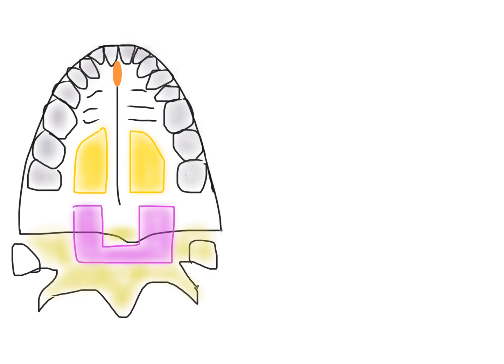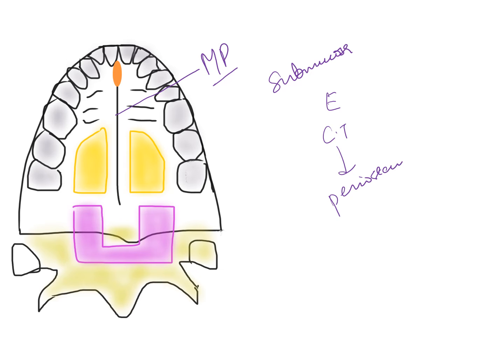Before proceeding to the incisive papilla, let's discuss the submucosa of the hard palate. The submucosa is variable — in some places, such as the mid-palatine raphe region, submucosa is absent and the epithelium and connective tissue are directly attached to the underlying bone. This type of tissue is called mucoperiosteum.